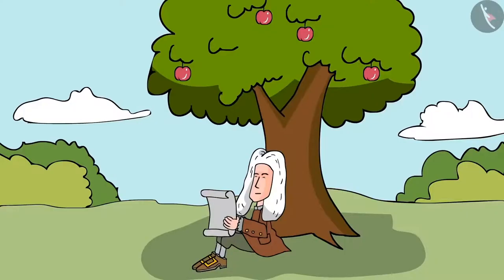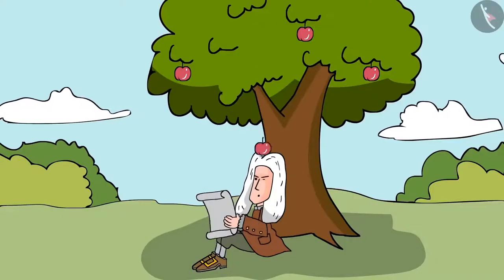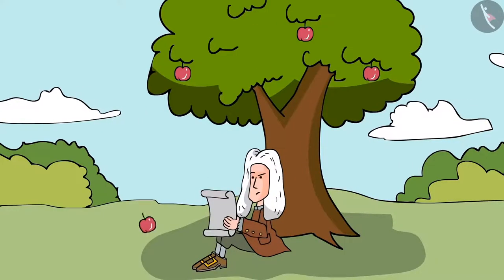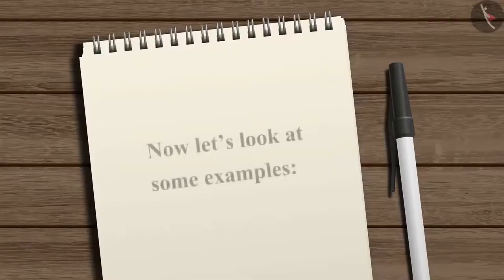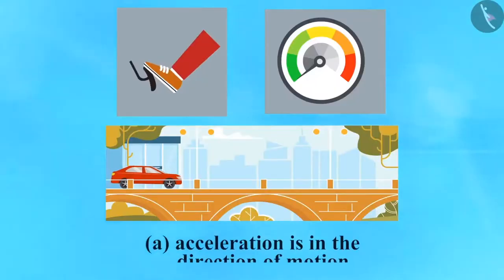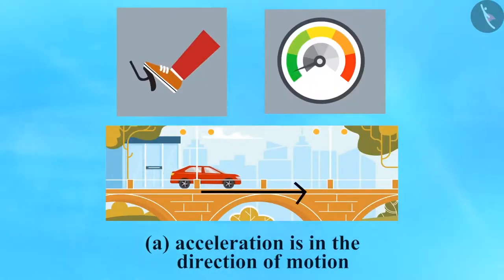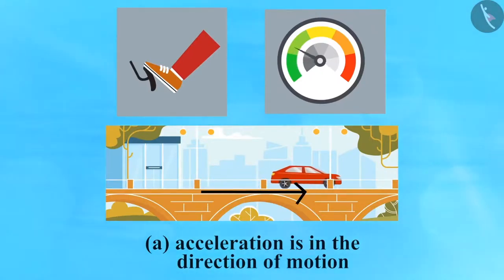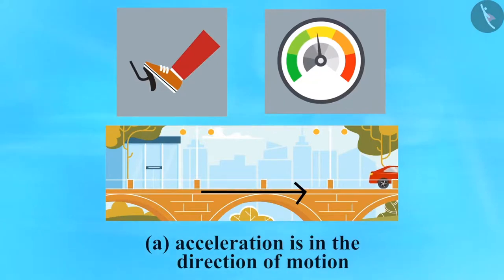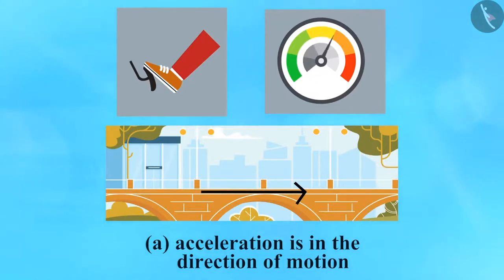You will learn about gravity in Chapter 10. Now let's look at some examples. A: Acceleration in the direction of motion — when the driver pushes the accelerator pedal, the car starts from rest and speed keeps increasing; the acceleration is positive.